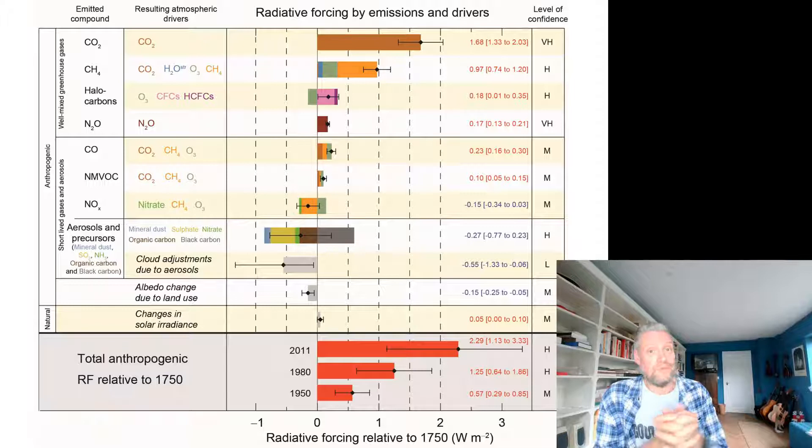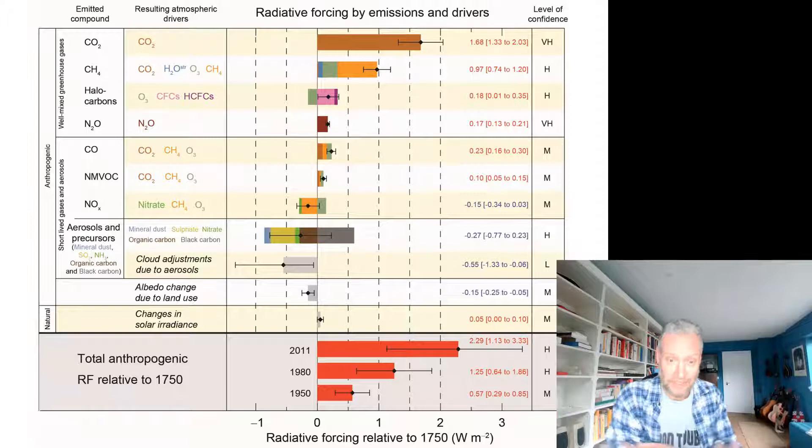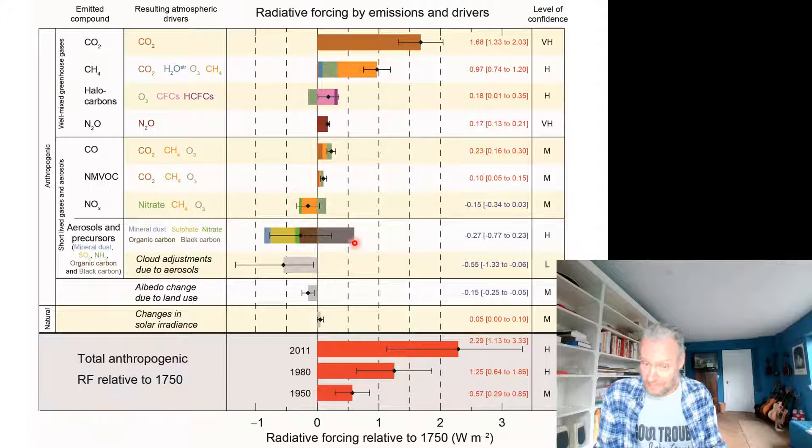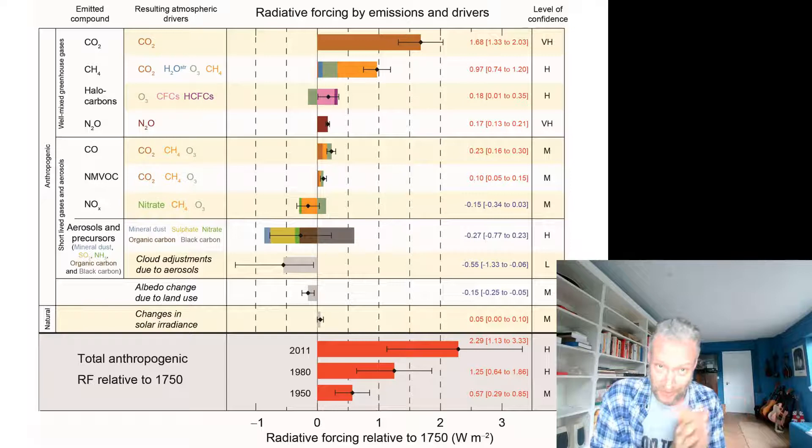These are short-lived gases mostly, so their effects are much more regional than global — these gases simply do not live long enough in the atmosphere to spread across the globe. Besides gases, we also put dust in the atmosphere, and that has a net negative effect on the temperature — again, mostly a regional effect rather than a global effect.